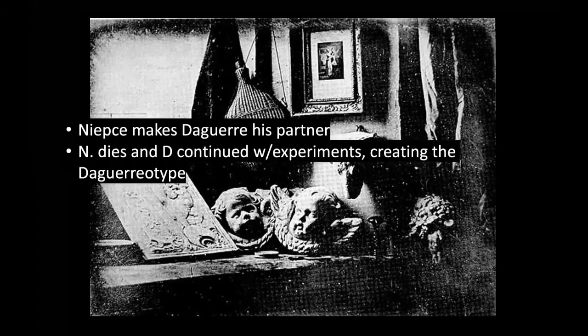Now we're going to talk about a photograph called Still Life in Studio. We're just going to focus on the artist's last name, Daguerre, 1837, and it's a photograph. Niépce was having technical difficulties keeping the image on the metal, so he made Daguerre his partner, and then he died. So Daguerre continued with the experiments and created what is now known as the Daguerreotype.